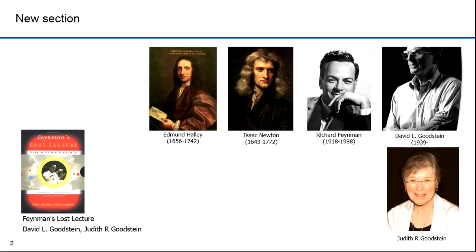Newton, not entirely satisfied, delayed publication, wanting to make revisions. That lasted almost three years, during which Newton — now hooked on the problem — seems to have done nothing else but work on it. What emerged at the end, in 1687, was Principia Mathematica, Newton's masterpiece and the book that created modern science.